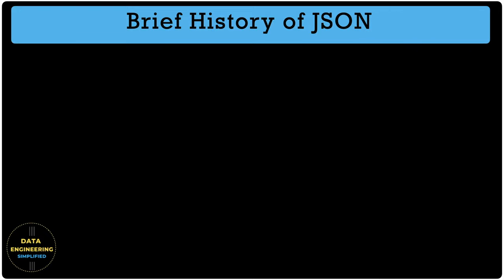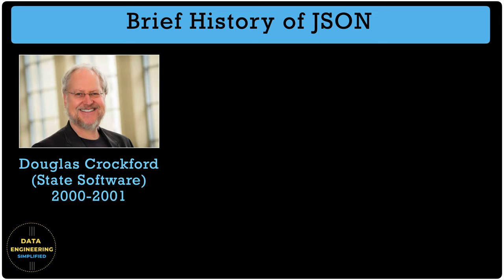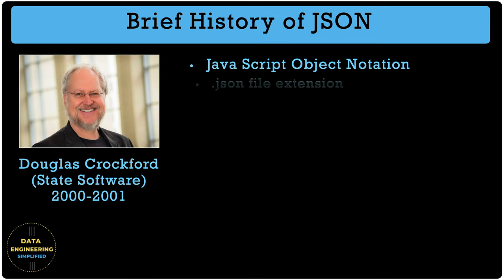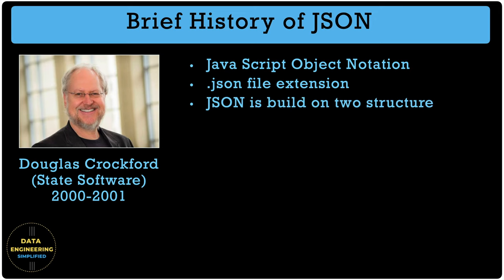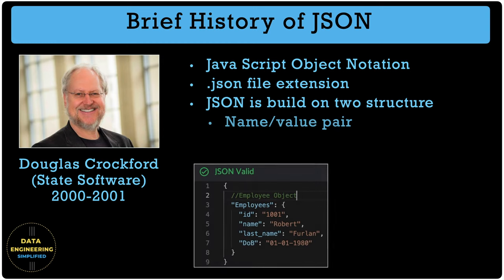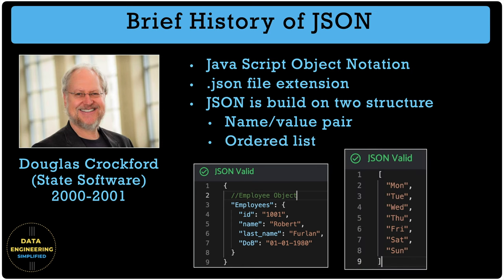Let's start with a brief history of JSON. JSON was initially created by Douglas Crockford at his company State Software in 2000 and 2001. JSON stands for JavaScript Object Notation and is a language-independent data format. JSON files use the .json file extension. JSON is built on two structures: key-value pairs or ordered lists. Key-value pairs are enclosed in curly brackets, and the ordered list is enclosed in square brackets. Both are valid JSON objects.